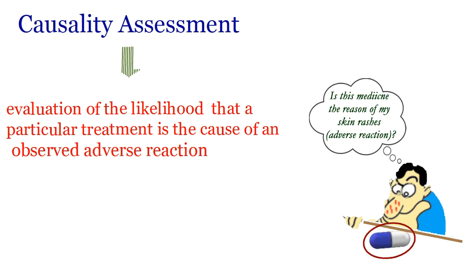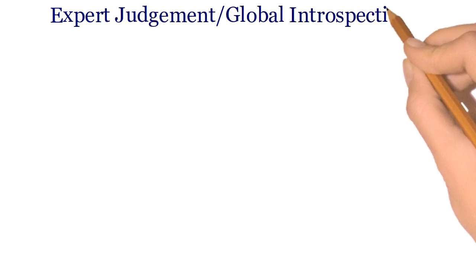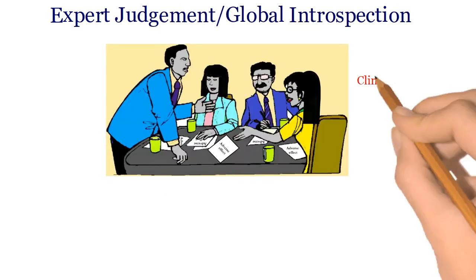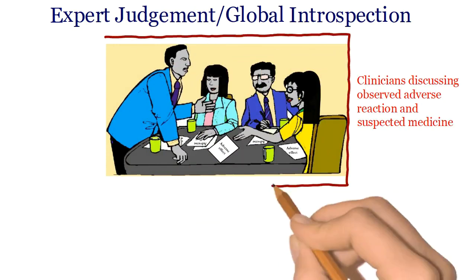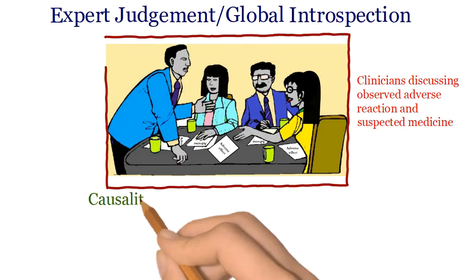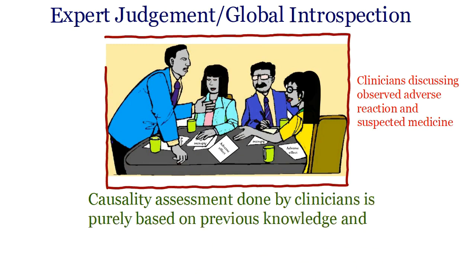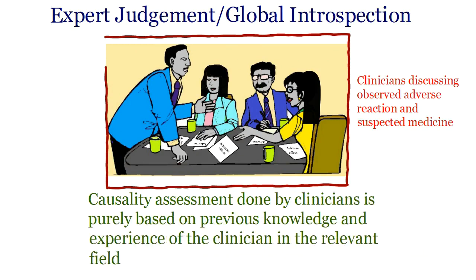There are a number of methods which can be used to assess the causal relationship between the medicine treatment and the medicine reaction. The first one is expert judgment. This method is commonly used by clinicians, where they try to study the link between the particular treatment and the occurred adverse reaction. This kind of assessment is purely based on the previous knowledge and experience of the clinician in the relevant field.